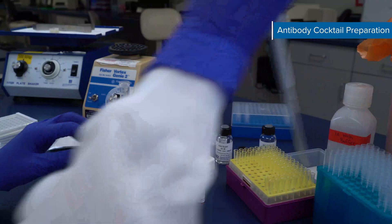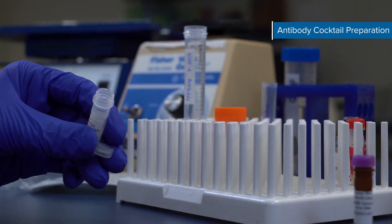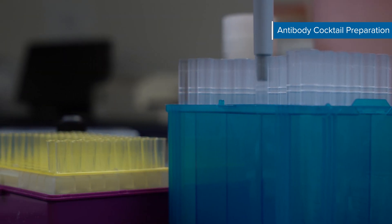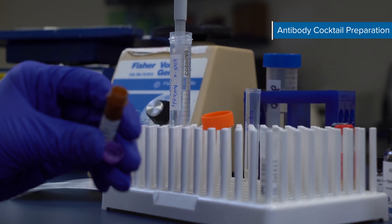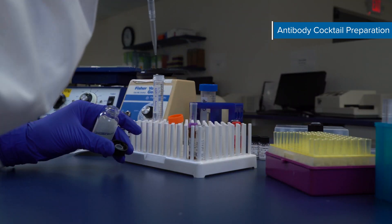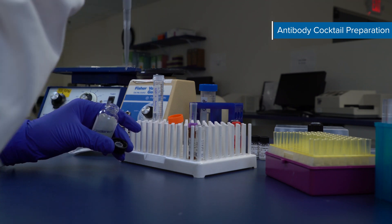Next, in a 15 mL conical tube, add 300 µL of the reconstituted capture antibody concentrate and 300 µL of the detection antibody concentrate to 5.4 mL of the specified diluent. This produces 6 mL of antibody cocktail. Avoid vigorous mixing.